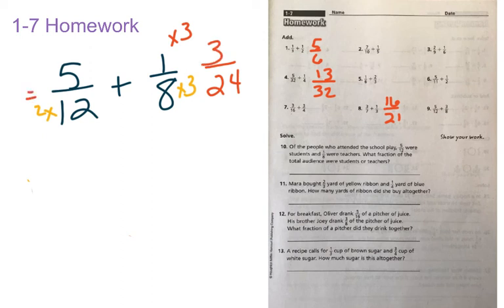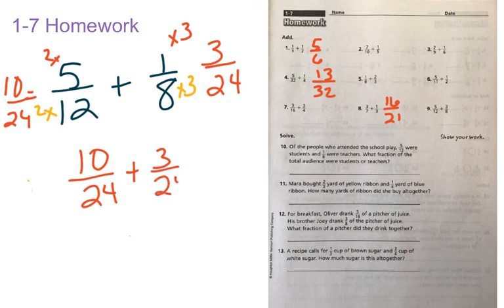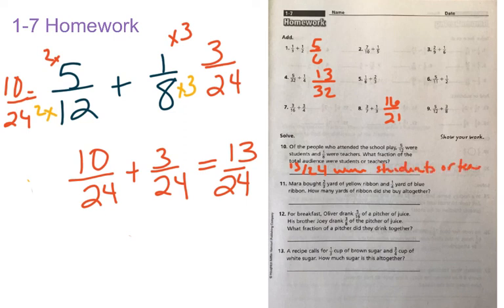And now we're going to work on the other side. 12 times 2 is equal to 24. Whatever I do to the denominator, I do to the numerator. So I have to multiply by 2. And 5 times 2 is equal to 10. So now I have 10 24ths plus 3 24ths. And my denominator stays the same in an addition problem. And 10 plus 3 is equal to 13. And so 13 24ths of the audience were students or teachers. And you can write, were students or teachers.